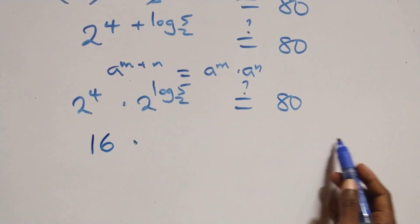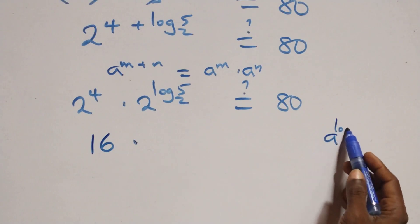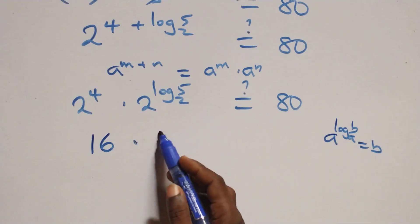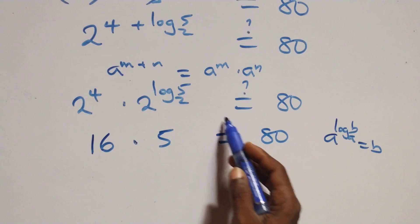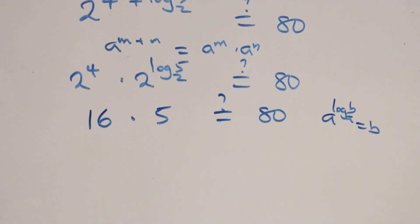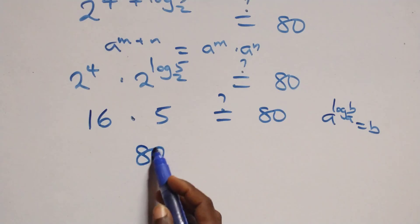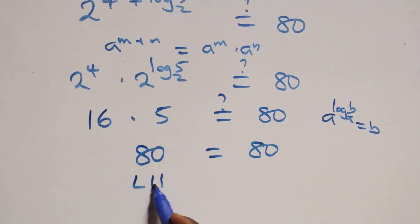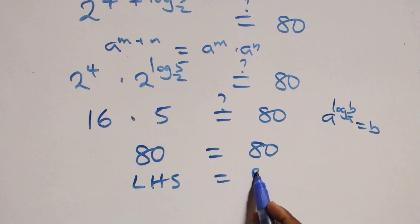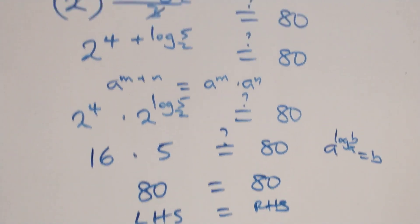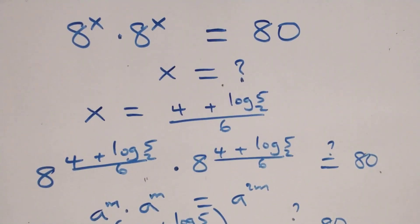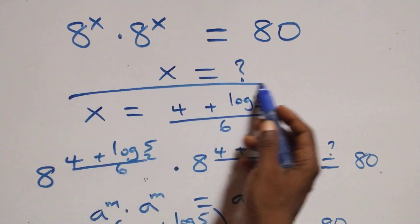Using the identity a raised to power log b to base a equals b, we have 2 raised to power log₂5 equals 5. So we get 16 times 5, which gives us 80 — equal to 80 on the right hand side. Left hand side equals right hand side. Therefore, we conclude that x equals to (4 + log₂5) / 6 satisfies the given problem.